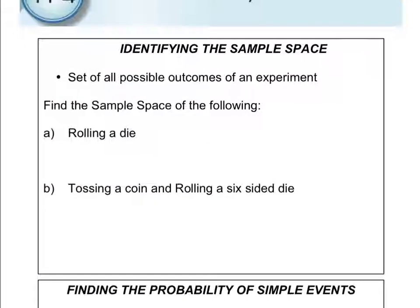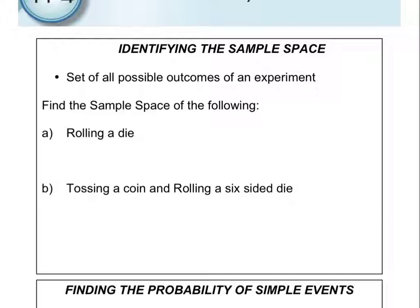The first thing we're going to talk about is identifying the sample space — the set of all possible outcomes of an experiment. Find the sample space of rolling a standard die. There are six sides, so the possibilities are: you could get a 1, 2, 3, 4, 5, or 6. Any one of those is all the possibilities — that's the sample space for rolling a die.